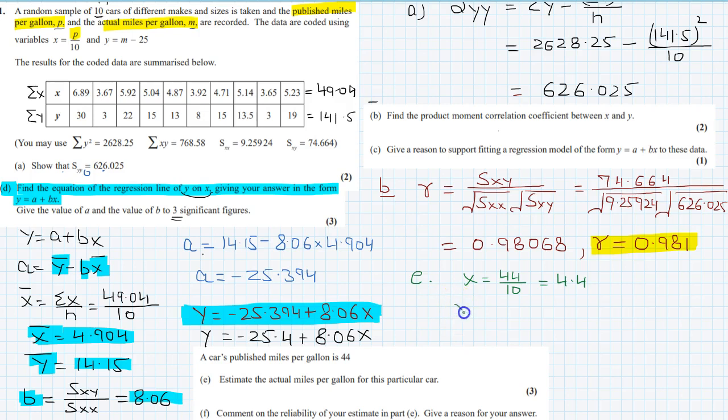Our equation of regression is y is equal to minus 25.4 plus 8.06x. Now x can be written as p over 10, and p over 10 is 4.4, so I can write this is 4.4. And y can be written as m minus 25, so instead of this y I can write m minus 25 is equal to 8.06 multiplied by 4.4.